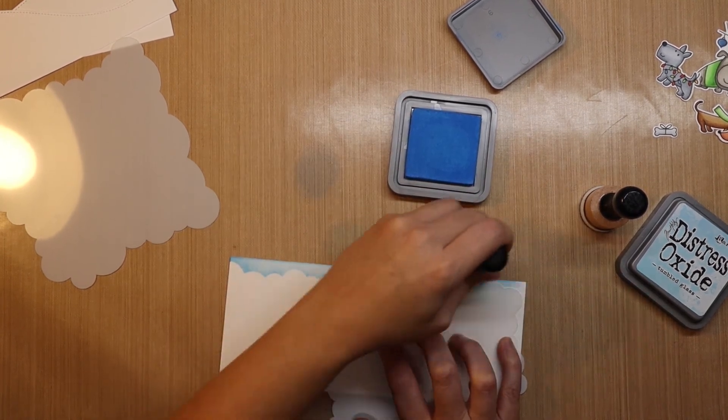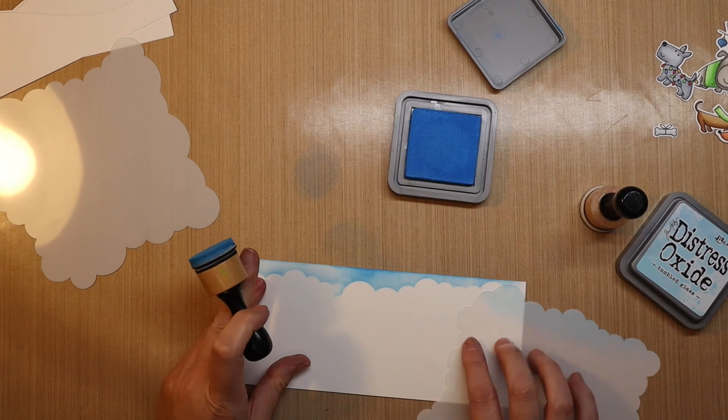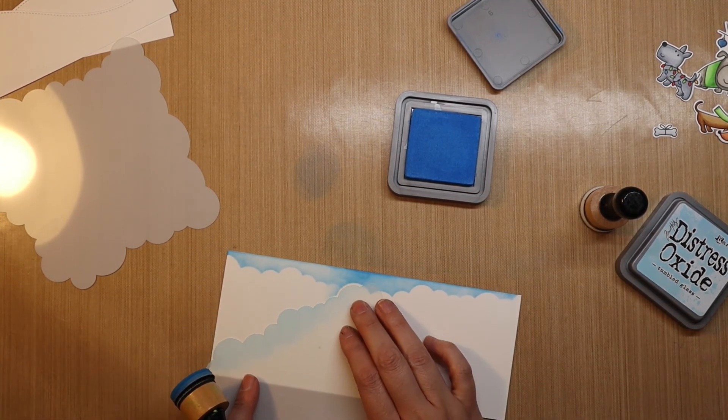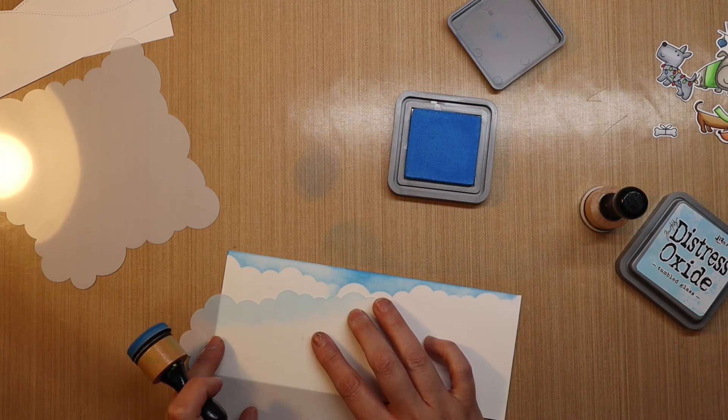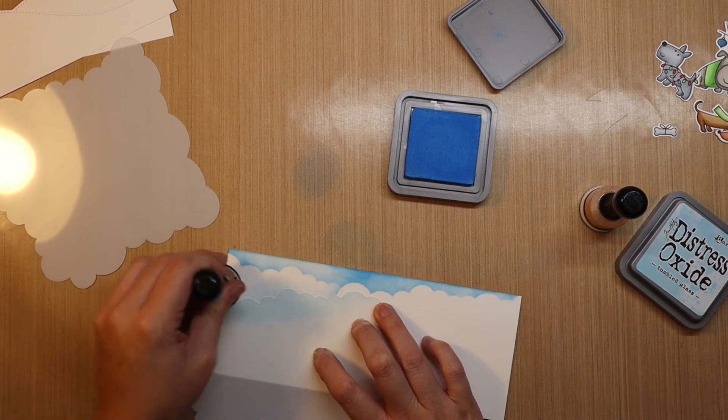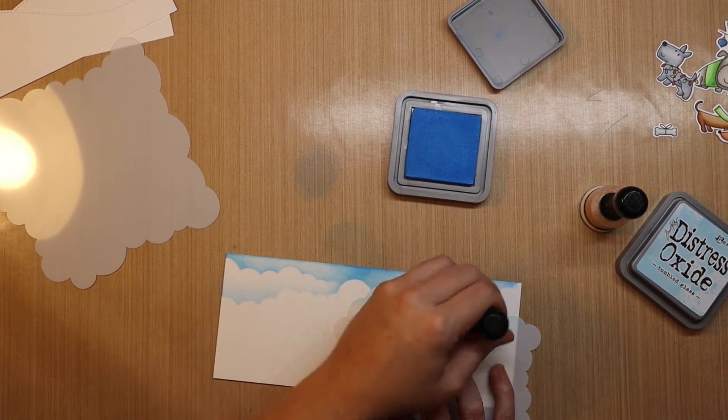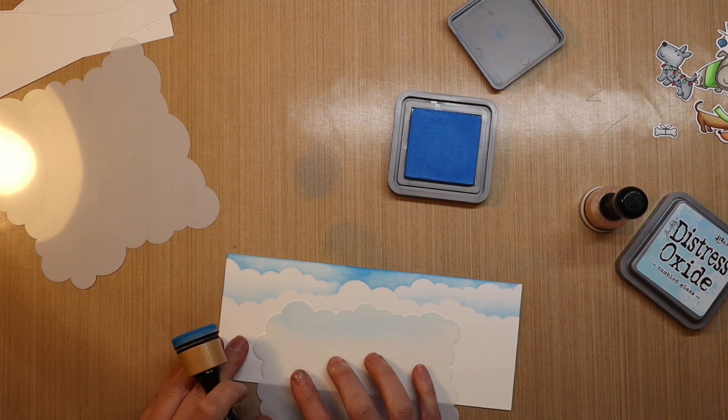I am using salty ocean for the sky, just lightly going around these clouds, moving things around, not being too prescriptive with it, want to keep it loose and easy. And then once I feel like I have enough clouds, I'm going to move on to my hillsides.